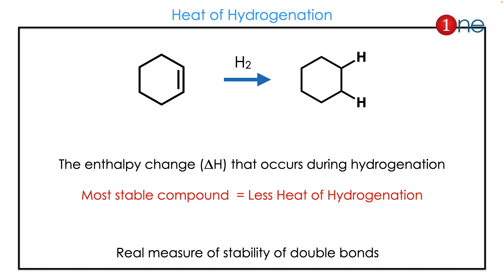In double bonds, when you add hydrogen you get saturation, which is alkane formation. The heat change during hydrogenation is called heat of hydrogenation. Heat of hydrogenation can be related to stability: the more stable the double bond, the less the heat of hydrogenation. Basically, heat of hydrogenation is a real measure of the stability of double bonds.